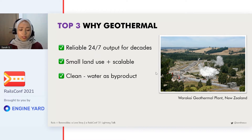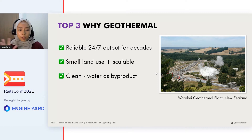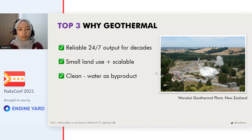The problem with solar, for instance, is that you cannot generate power for at least half a day. And even with wind, the weather is very hard to predict, and therefore it's very hard to have a consistent energy output every single time.